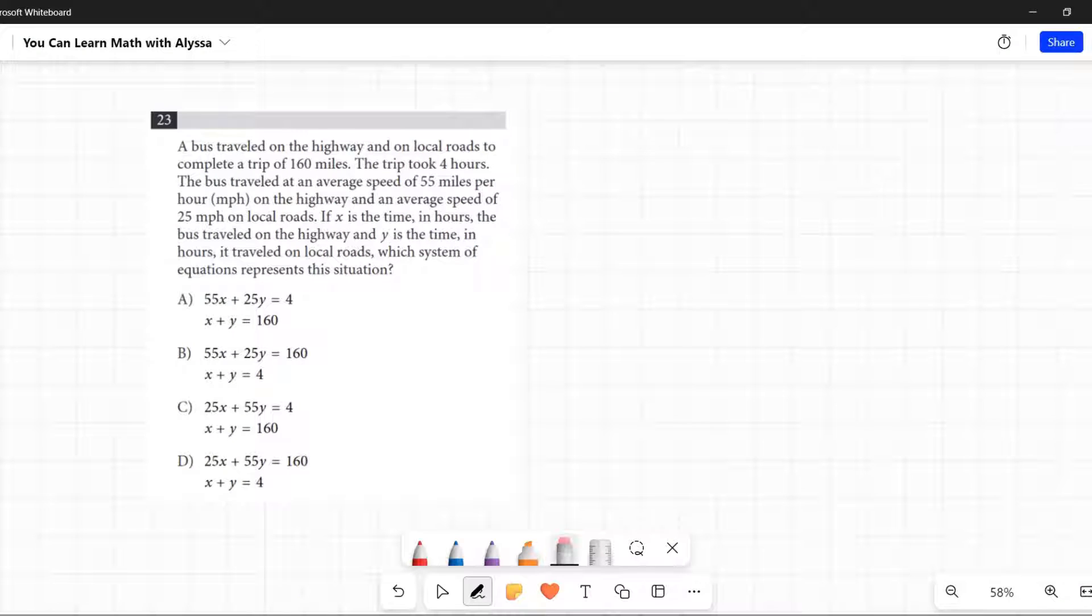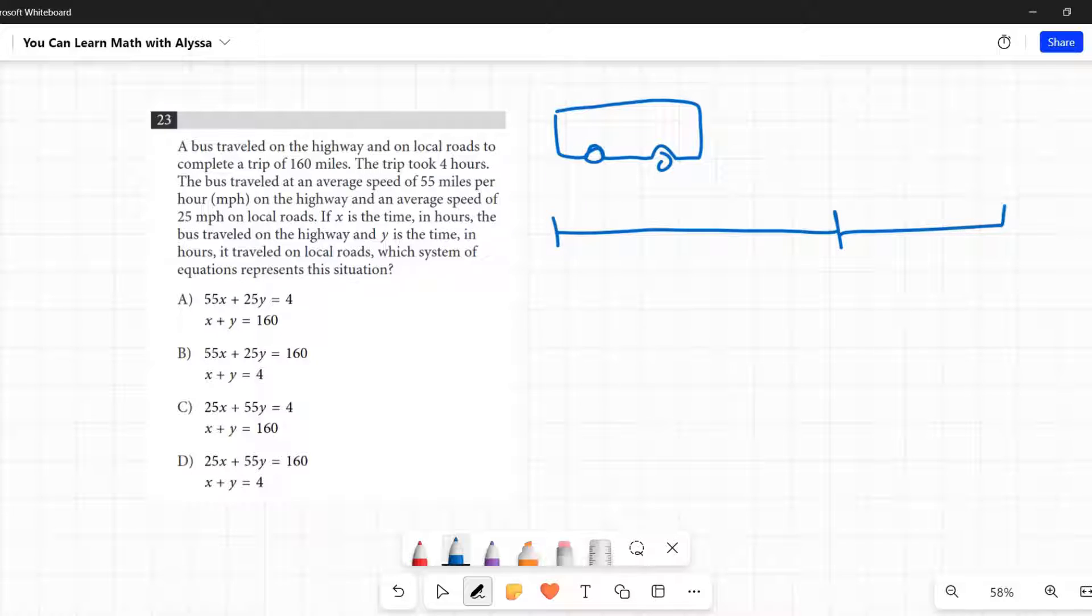Number 23: A bus traveled on the highway and on local roads to complete a trip of 160 miles. Okay, so we got this little bus traveling along. Let's say he goes on a highway and then he goes on local roads. He goes on a highway and then he goes on local roads, that's called local roads. And this total trip, this whole thing...